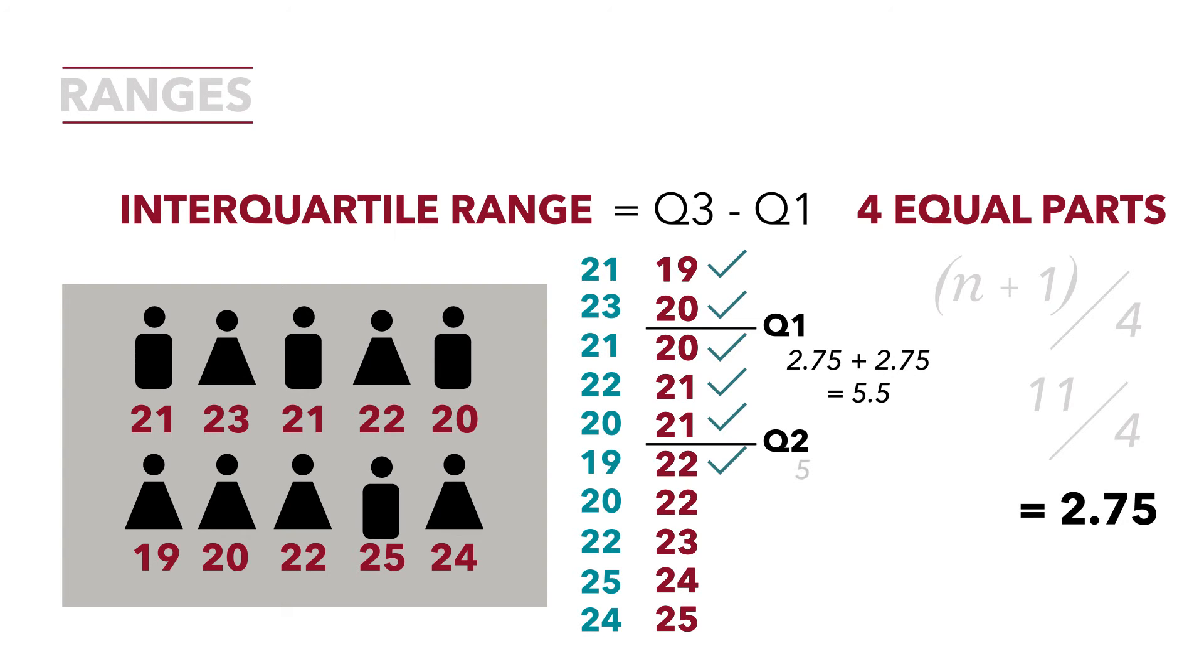So now we're at 5.5. We add another 2.75 to that, we get 8.25. So Q3 is between observations 8 and 9. Q3 is right here between 23 and 24. So we found our quartiles.